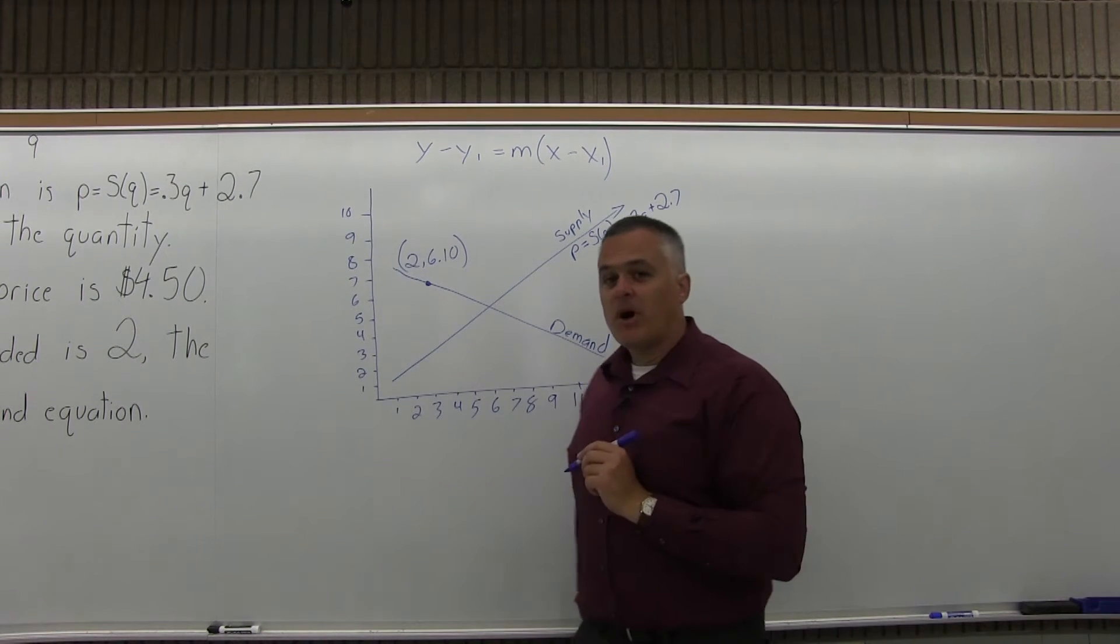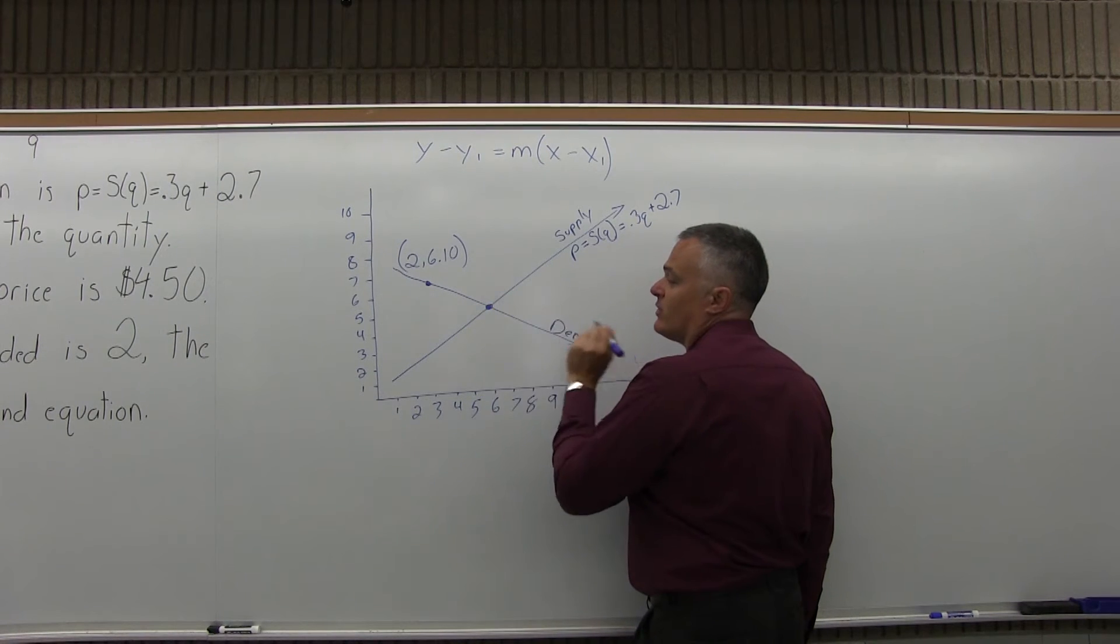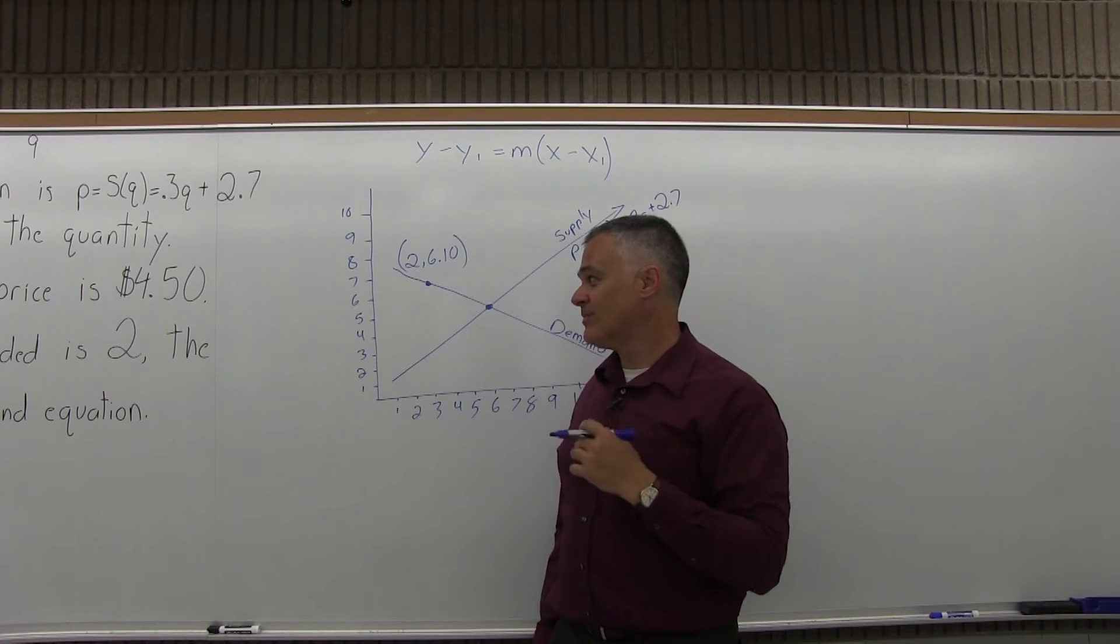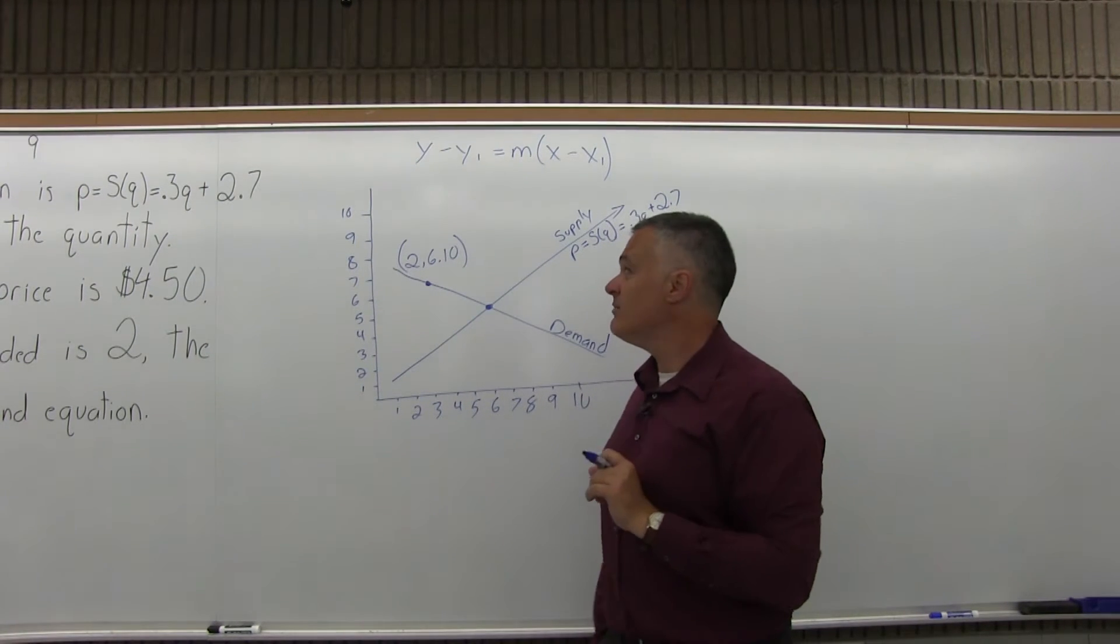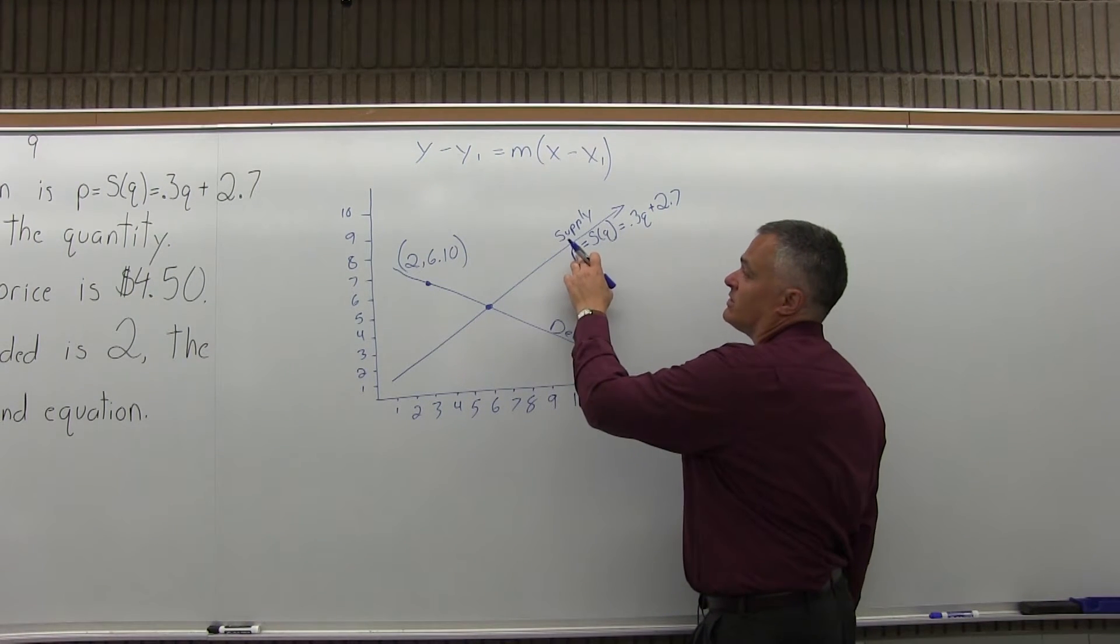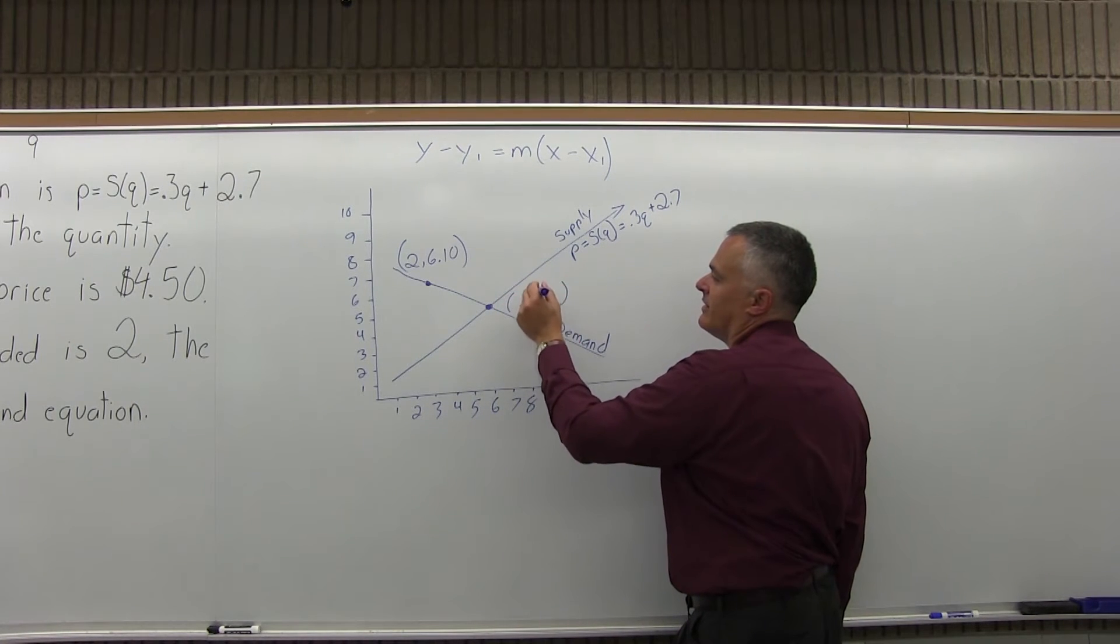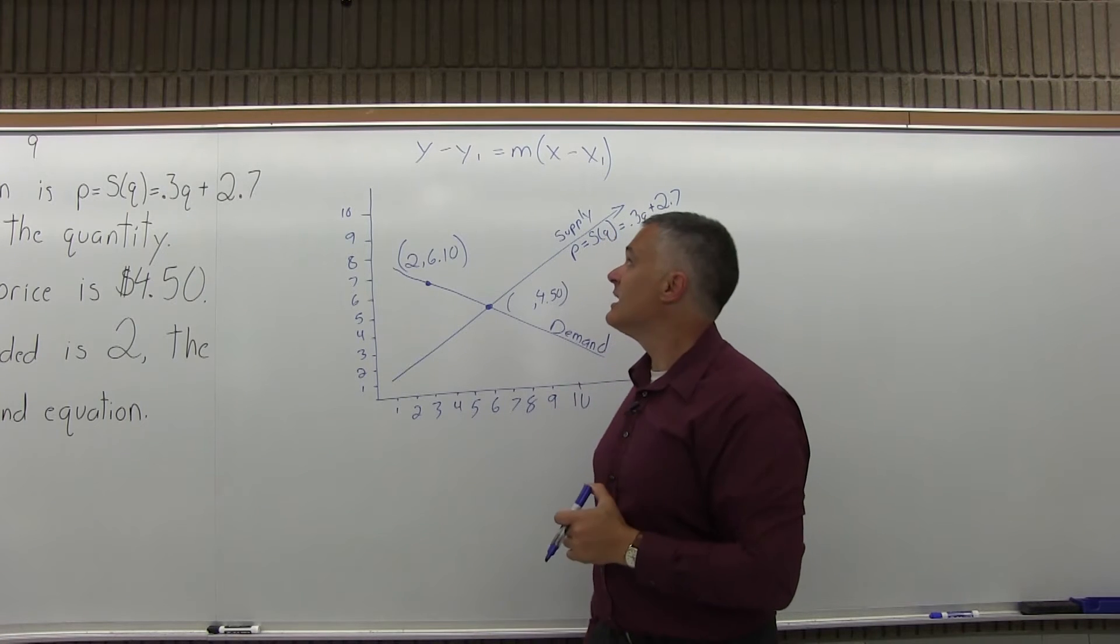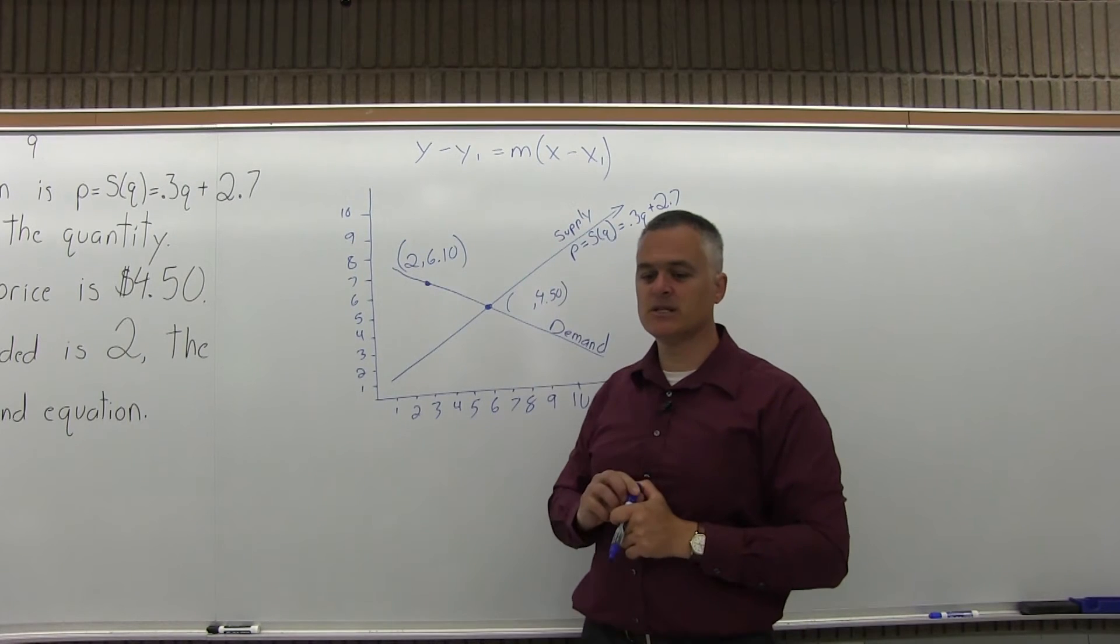The market price of $4.50 tells you that at the point where they intersect, one of the coordinates is $4.50. That's P, for price. P is typically equivalent to Y in these supply and demand equations. So the Y coordinate is $4.50. What we have to do is find the X coordinate, and we'll have two coordinates, and we'll be able to use our formula.